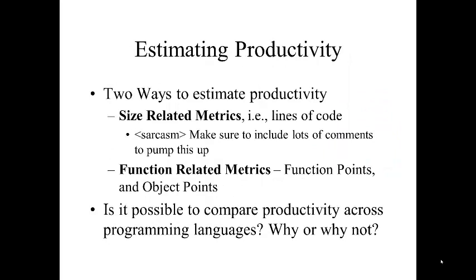Two ways to estimate productivity. One is size-related metrics — basically lines of code. There are real problems with calculating productivity based on lines of code: what is the complexity of the code being developed? Not all problems are equal. What language is the code developed in? Think about the instruction explosion from C++ down to assembly language — one line in C++ can take three lines in assembly. Is the programmer padding their code to look more productive? You really have to approach this like Fagan inspections and not use the data for performance evaluation reviews.